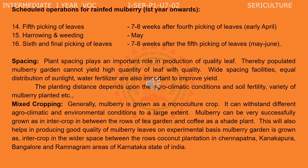Coming to spacing: spacing of plants also plays an important role in production of quality leaf. A densely populated mulberry garden cannot yield a high quantity of quality leaf. Wide spacing facilitates equal distribution of sunlight, water, and fertilizer, which are also important to improve leafing. The planting distance depends upon the agroclimatic conditions, soil fertility, and variety of mulberry planted.